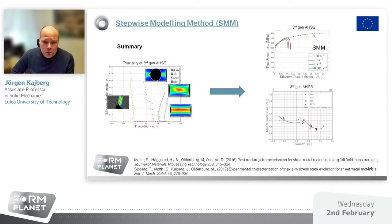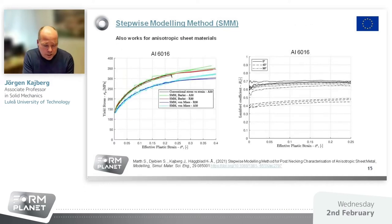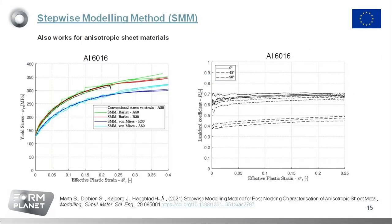If you want to read more about this method, there are two publications referenced. Within the FormPlanet project, we took this method one step further — from the very beginning it was developed for isotropic materials, but now it's also suited for anisotropic materials. You can see the flow stress curve obtained by using this method. The reference article is listed in the presentation.